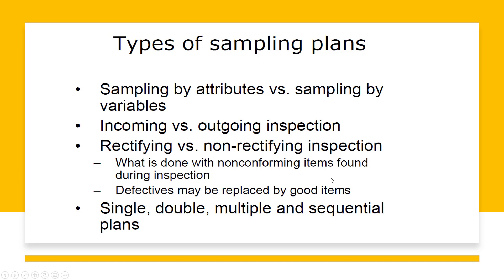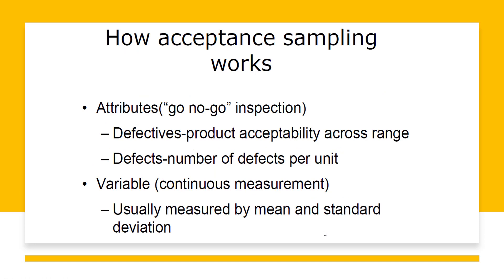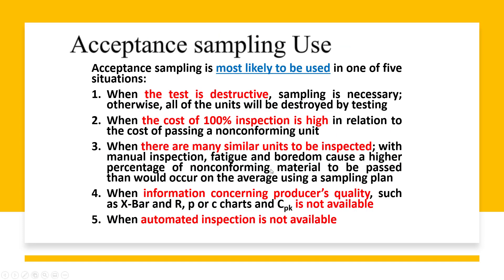Different types of sampling plans exist: single sampling plan, double sampling plan, multiple sampling plans, and sequential sampling plans. How acceptance sampling works for attributes — go/no-go inspection: should we adopt it or not? These are attributes — defective product acceptability across a range. You check number of defects per unit, how many defective parts a specific machine produces, and if there is variation in quality measured continuously by mean and standard deviation.